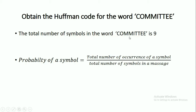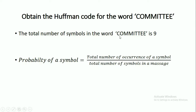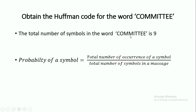The total number of symbols in the word 'committee' is 9. The probability of a symbol is given as the total number of occurrences of that symbol divided by the total number of symbols in the message, which is 9. The probability of C is 1/9, since C occurs only once. The probability of O is also 1/9. And for M, it is 2/9 because M occurs 2 times within the word 'committee'.